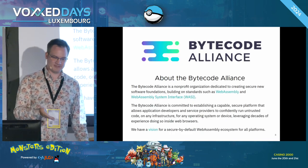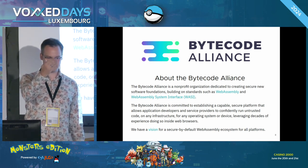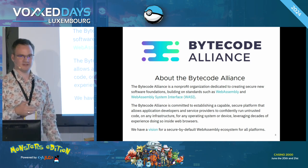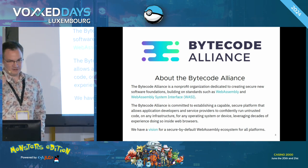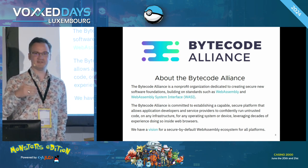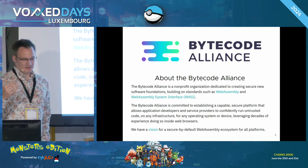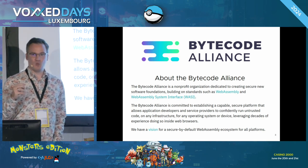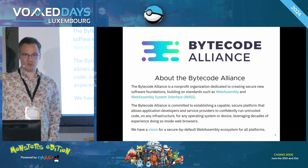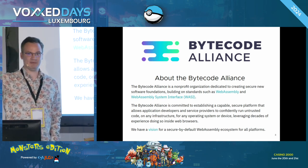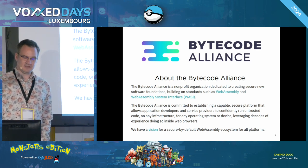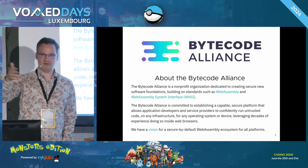One of the standard bodies that develops this, besides the W3C, is also the Bytecode Alliance. The Bytecode Alliance is a non-profit organization that takes care of the further development of the WebAssembly standard, the specification, and interoperability technologies like the WebAssembly System Interface, or WASI abbreviated. You can think of WASI as the POSIX for WebAssembly — what POSIX was to Linux and C, WASI is to WebAssembly. It gives you a generic intermediate layer to interface and do system calls on various target platforms.